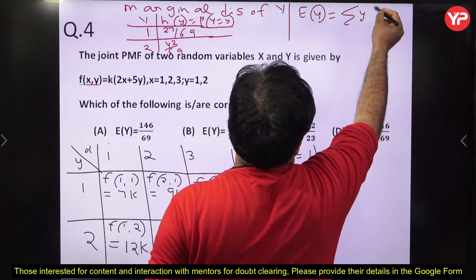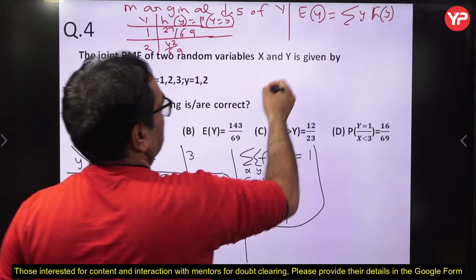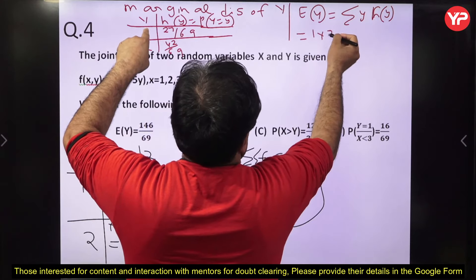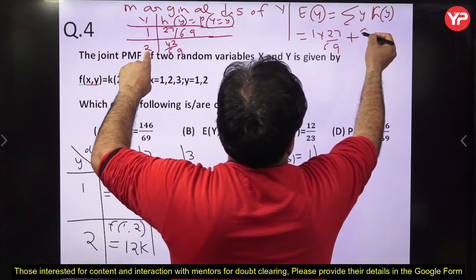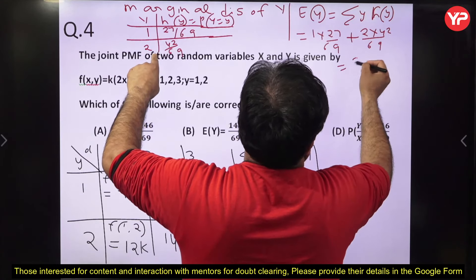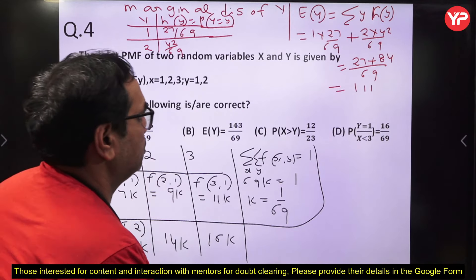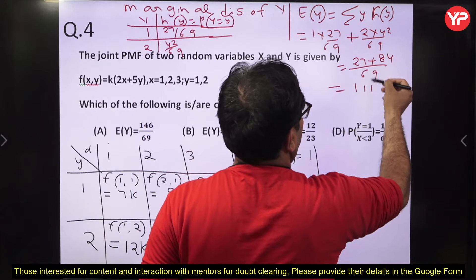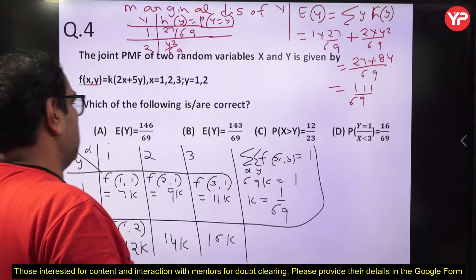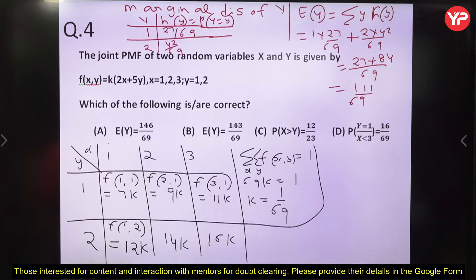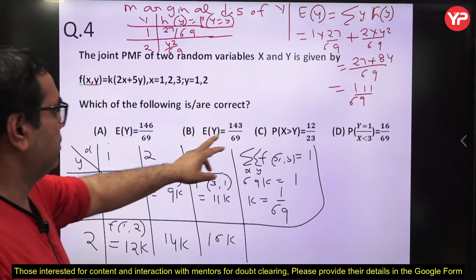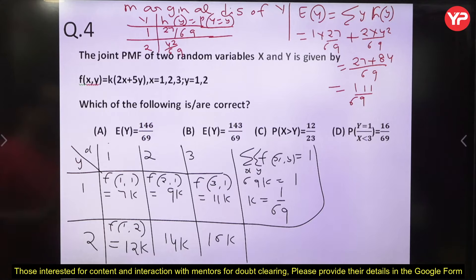E(Y) = 111/69. This does not match standard clean fractions, suggesting a possible calculation check is needed. The concept is correct: sum y·P(Y=y). For the option checking, the marginal distributions are computed and used to verify each option. Options A and B about expectation may not match cleanly — the concept of marginal distribution is the key idea demonstrated.